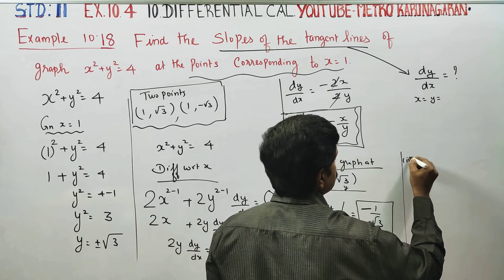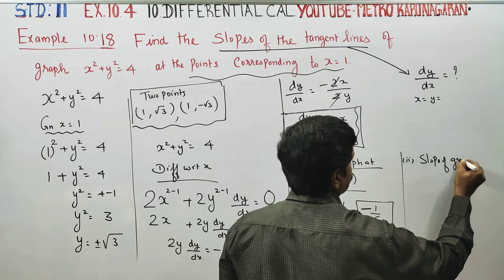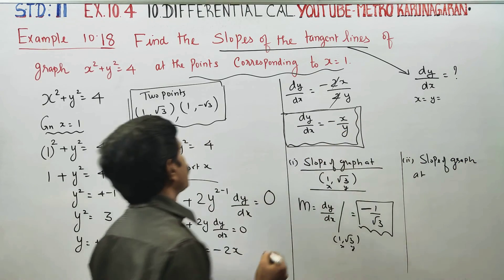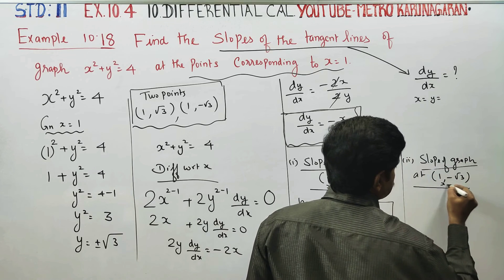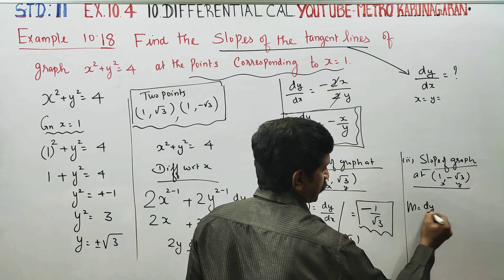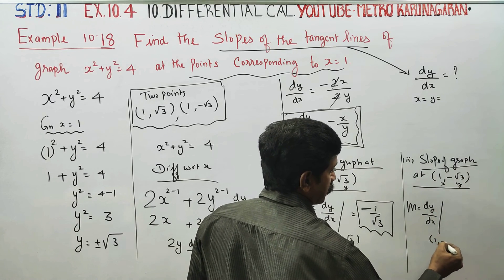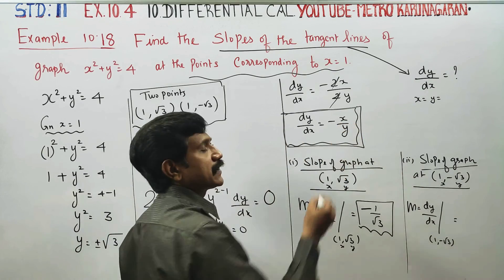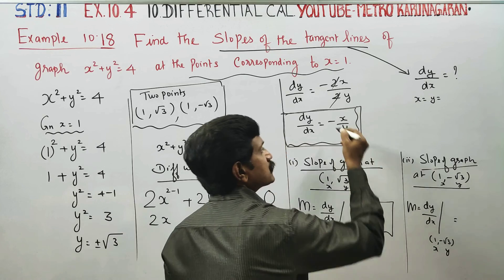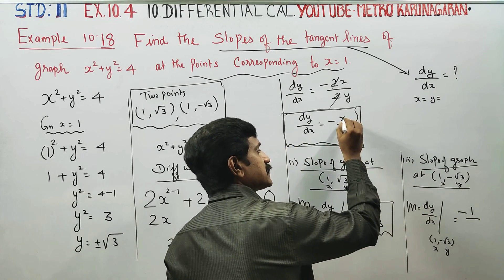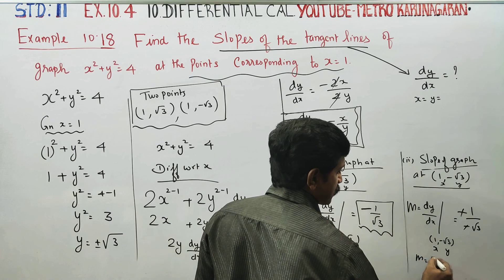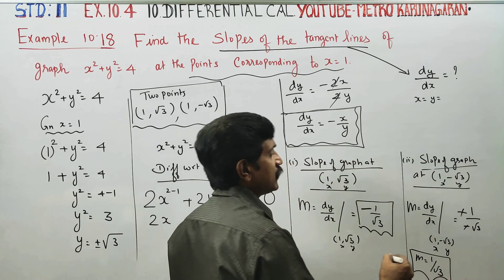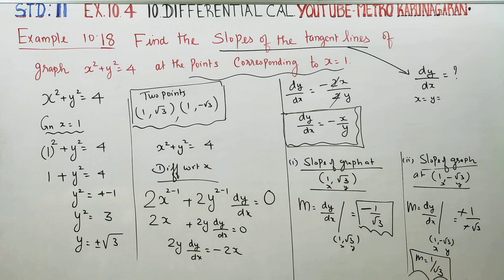Slope number 2: at the next point (1, -√3). Here x equals 1 and y equals minus root 3. Slope m equals dy/dx at (1, -√3). Substituting: minus 1 divided by minus root 3 — the two negatives cancel — therefore m is equal to 1 by root 3. This is the final answer for the second slope. So we get two slope answers. Thank you.